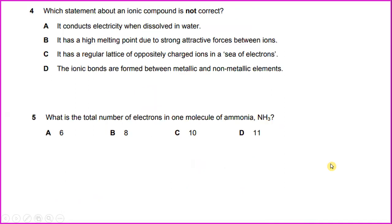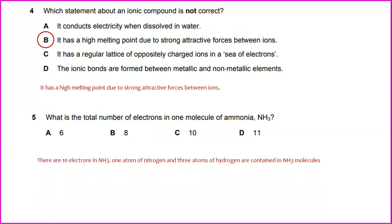Which statement about an ionic compound is not correct? It has a high melting point due to strong attractive forces between ions. The answer will be C. What is the total number of electrons in one molecule of ammonia, NH3? There are 10 electrons in NH3. One atom of nitrogen and 3 atoms of hydrogen are contained in NH3 molecules.